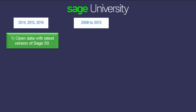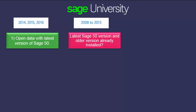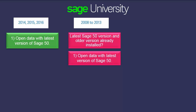If you are updating from versions between 2008 and 2013, the older version of Sage 50 needs to be installed on the same computer. We have two possible scenarios in this case. The first scenario occurs when the latest version of Sage 50 and the older version are already installed on the same computer. In this case, you can open the data file directly with the latest version of Sage 50. After the conversion is successful, the older version can be uninstalled if necessary.